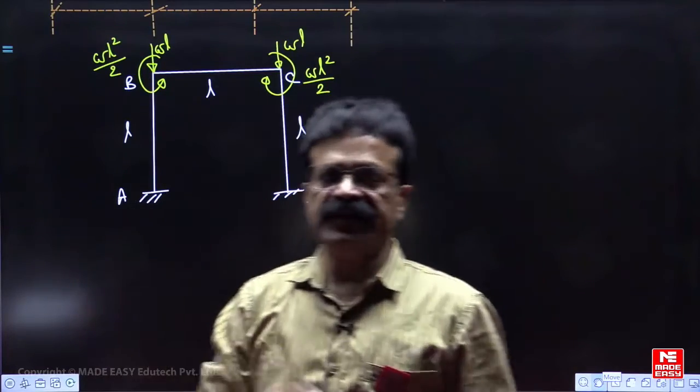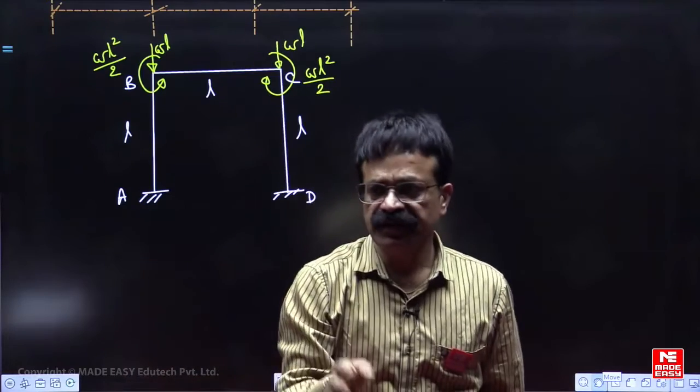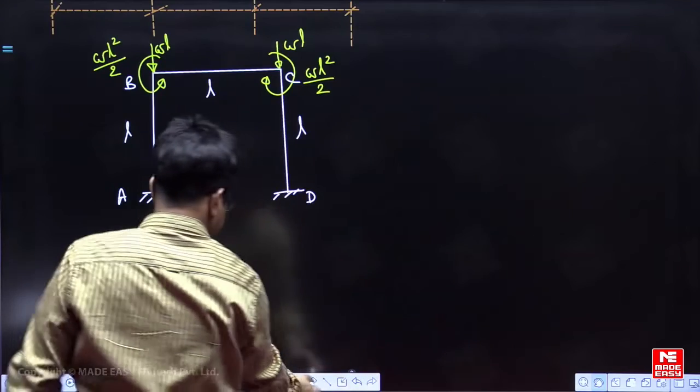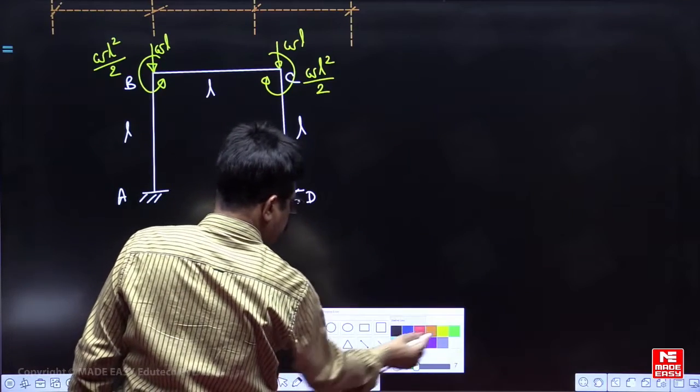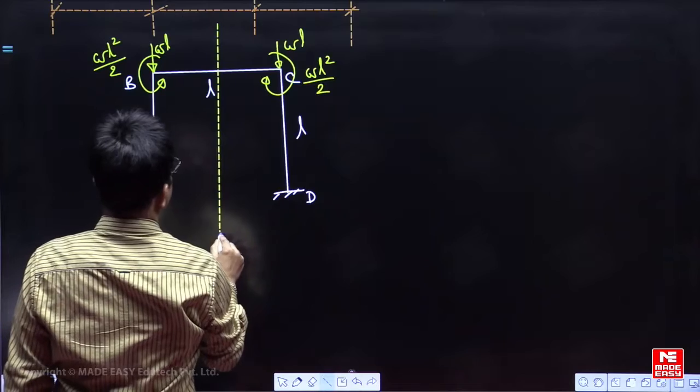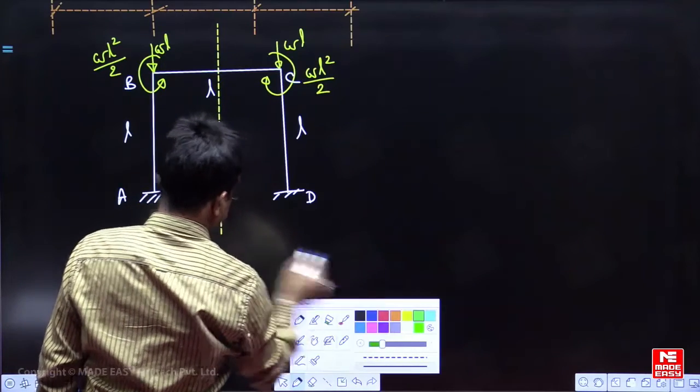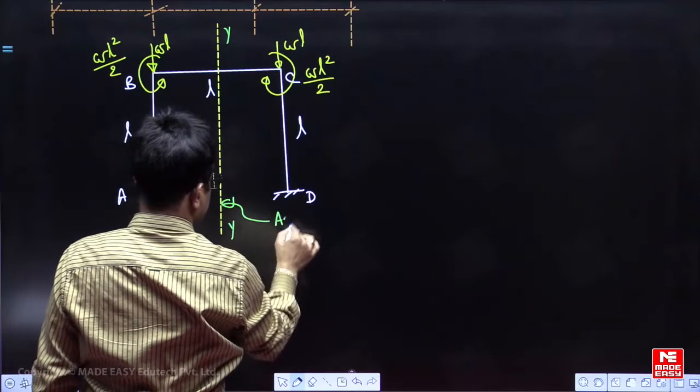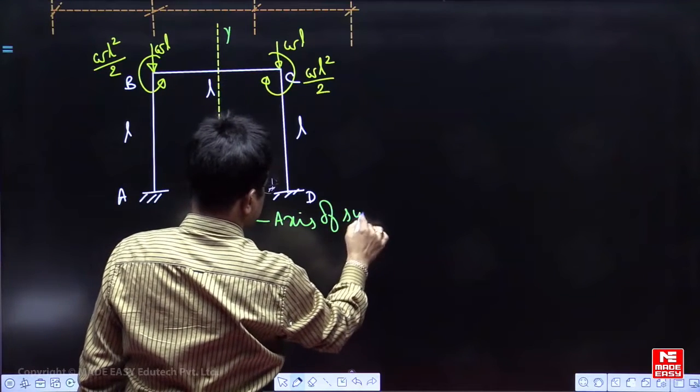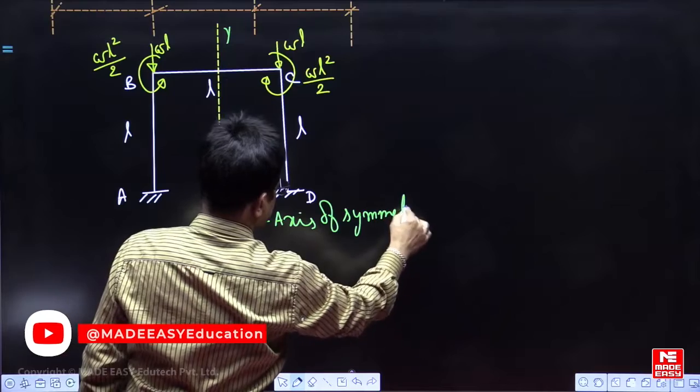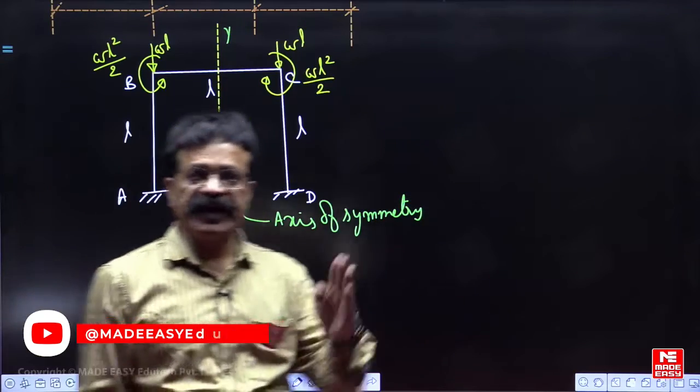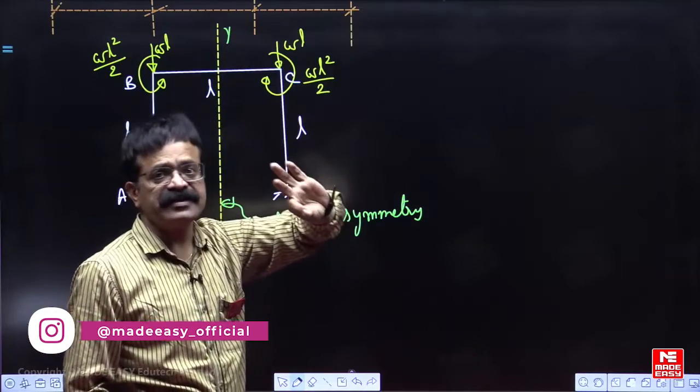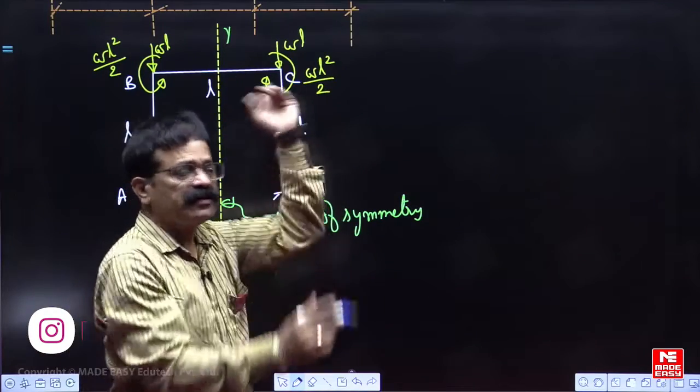Now, we have learned that in moment distribution method, if the structure is symmetrical and symmetric axis passing through the mid span like this as in this case, this is the axis of symmetry Y, Y. If any structure is symmetrical about an axis passing through the mid span, what we do is remove the span and replace it with an imaginary span, whose stiffness is half of the original stiffness.